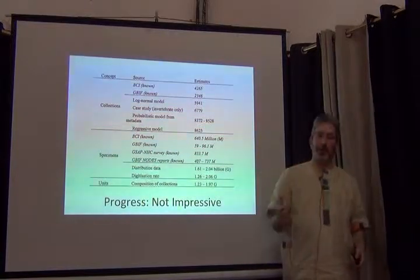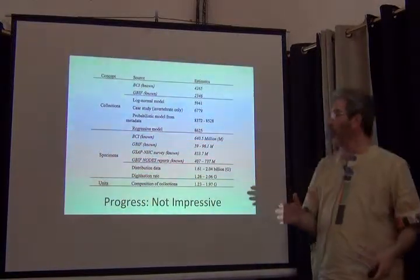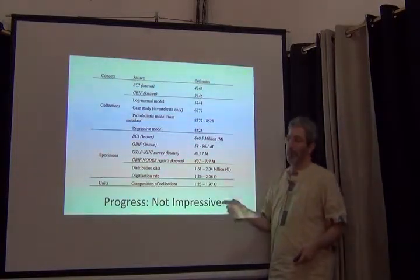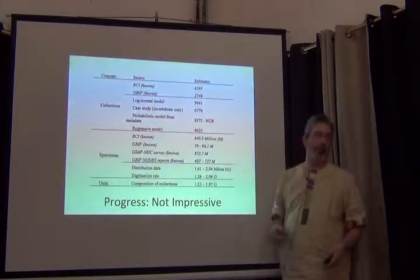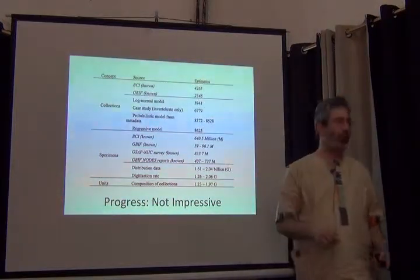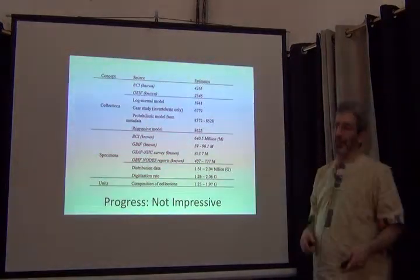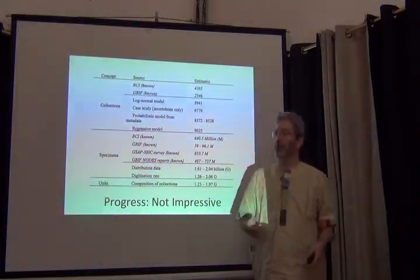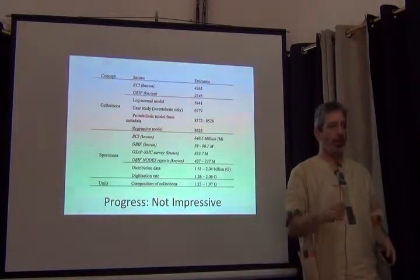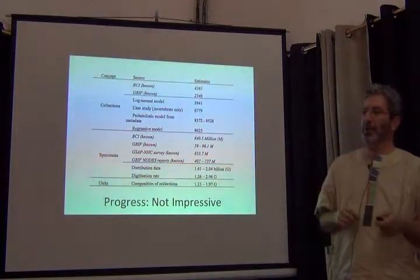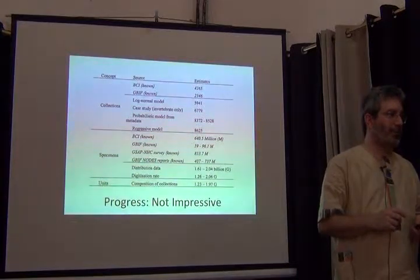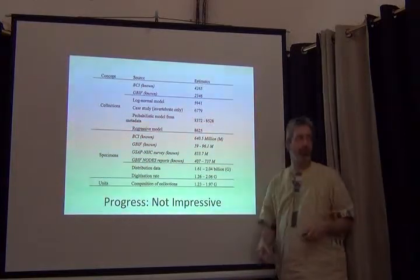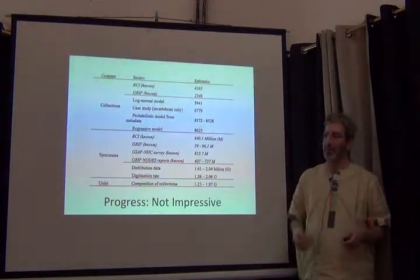In GBIF right now there are less than 100 million specimen-based records. That suggests we are one-twentieth of the way done — one-fifteenth to one-twentieth. Or to put it worse, 19 out of every 20 specimens in the world don't participate in digital accessible knowledge. That's not very impressive progress if you view it by how much is left to do.